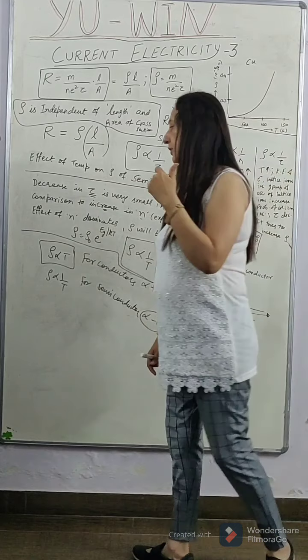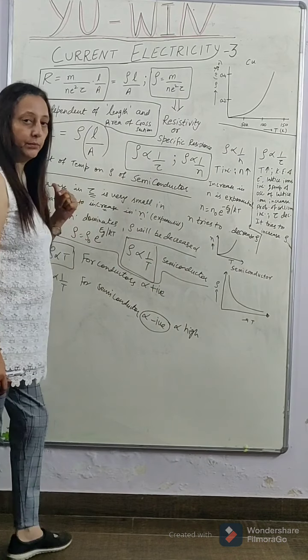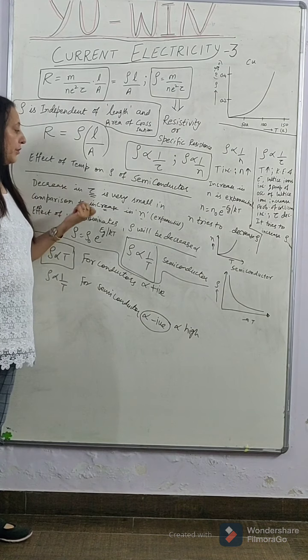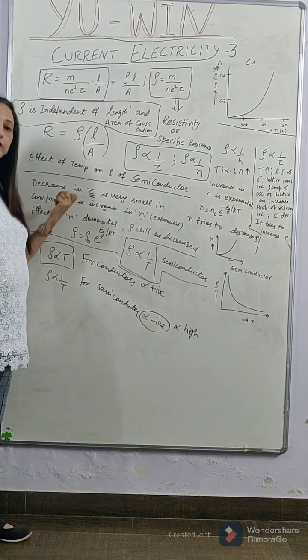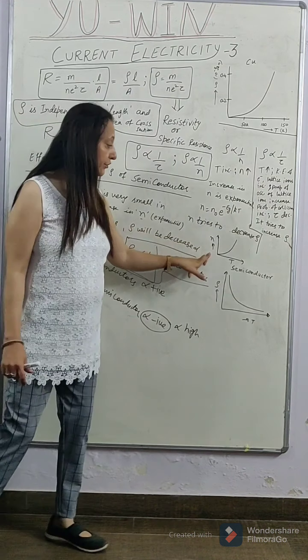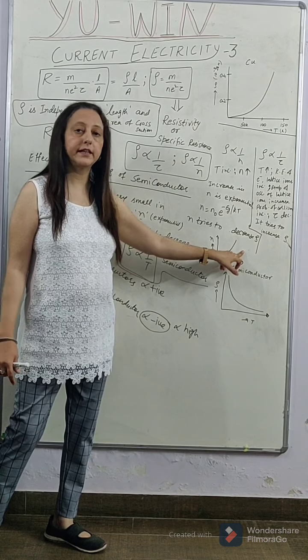As temperature increases, covalent bonds break. And the more the covalent bonds break, the more is the liberation of electrons. More electrons are freed. So number of electrons per unit volume increases greatly.